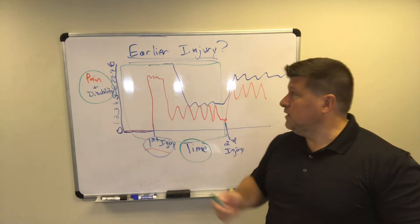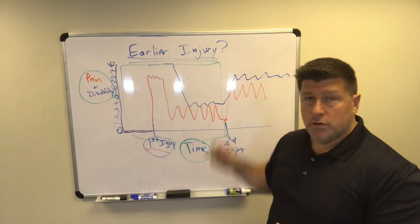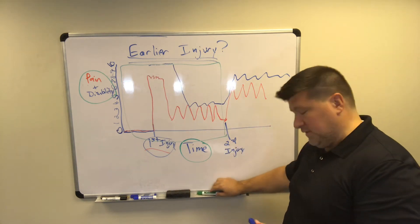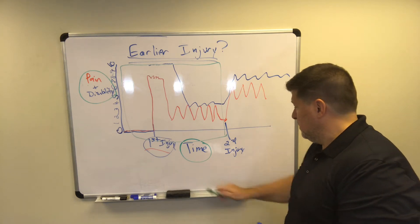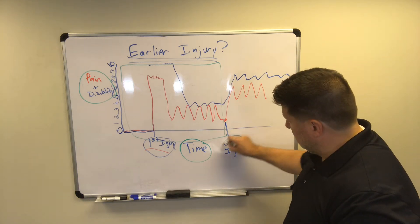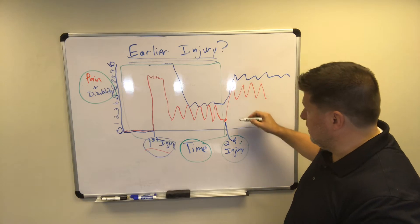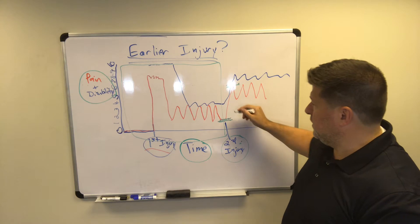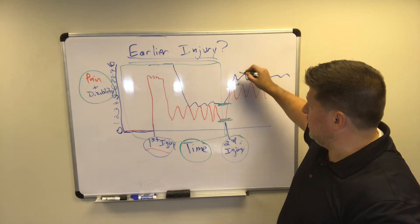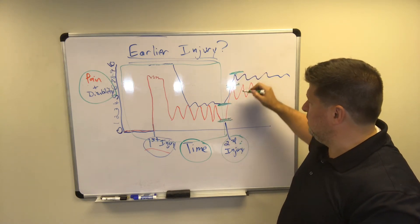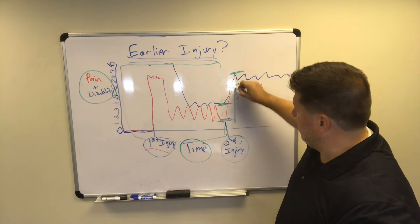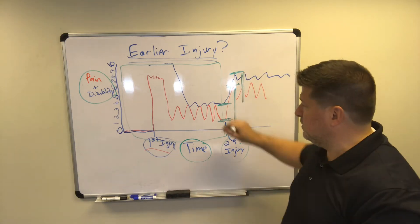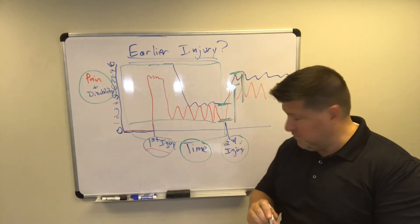The answer is yes. Even if you have an earlier injury, the law in Illinois says that if you're in a second accident, if you have a second injury, see his pain levels went from here up to here. And then his disability levels went from there up to there. So we can claim those pain levels and we can claim those disability levels in a new case, even though he's got those problems before.